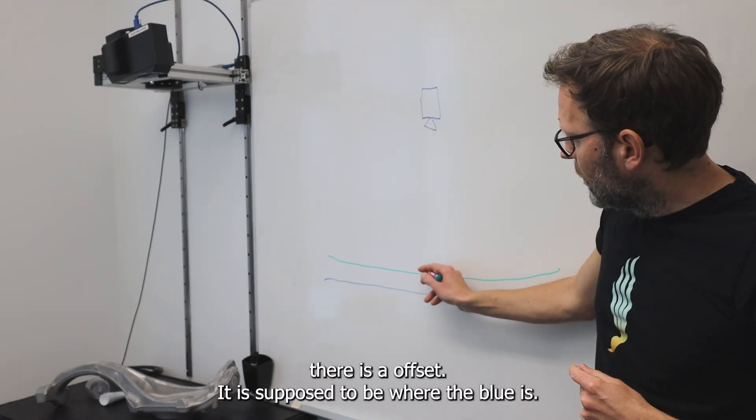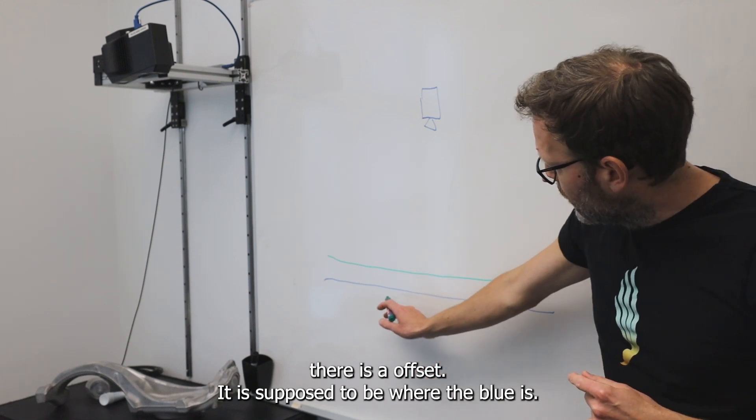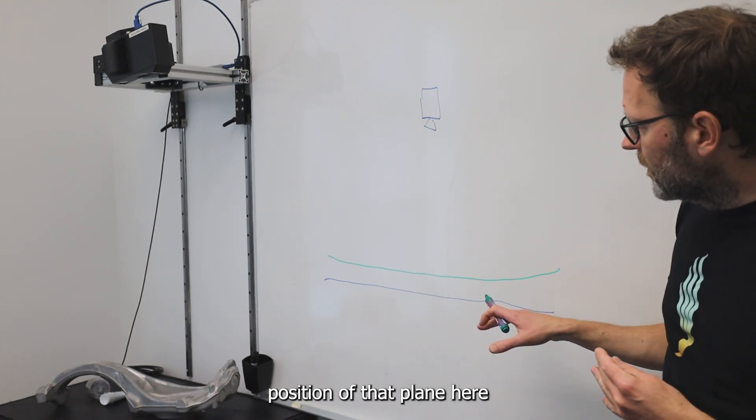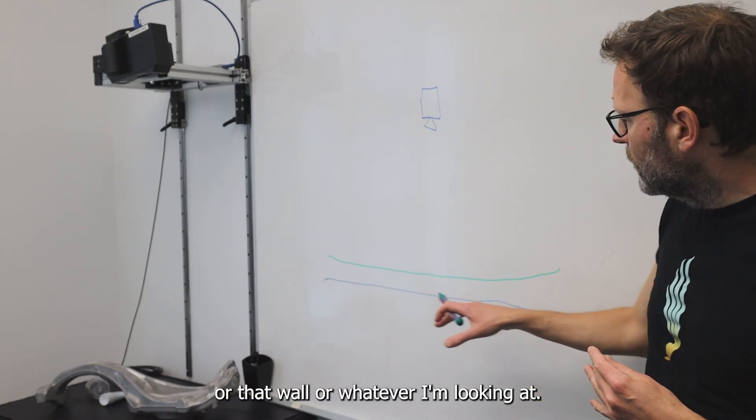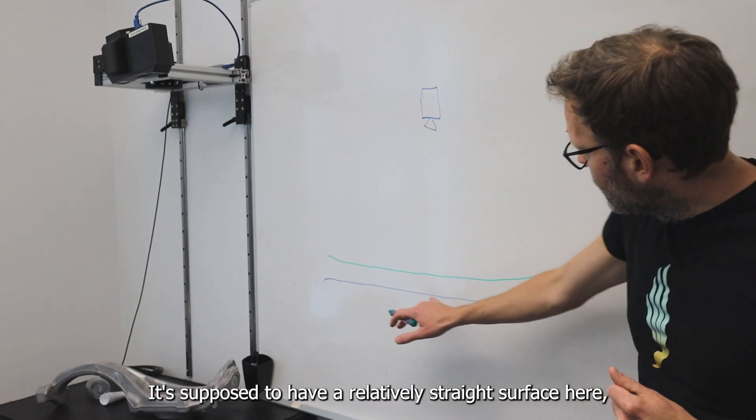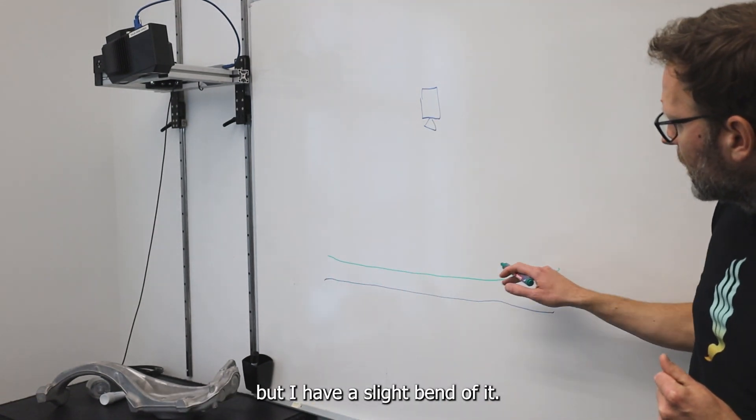There is an offset. It's supposed to be where the blue is - that is the correct position of that plane here, or that wall, or whatever I'm looking at. It's supposed to have a relatively straight surface here, but I have a slight bend of it.